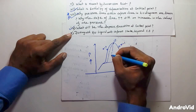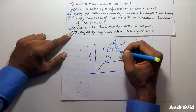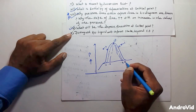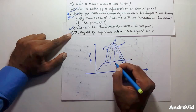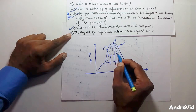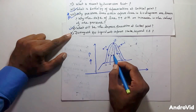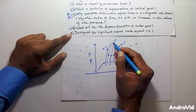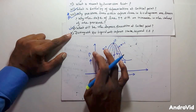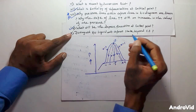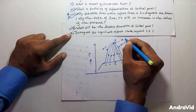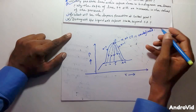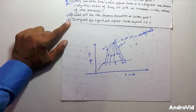If we draw lines of constant dryness fraction — 0.1, 0.2, up to 0.8, 0.9 — each line has a different value of dryness fraction, and from the diagram it is very clear that all these lines emerge from the critical point. Therefore, from the property diagram we can easily say that the dryness fraction at the critical point is undefined, i.e., X at CP is undefined.